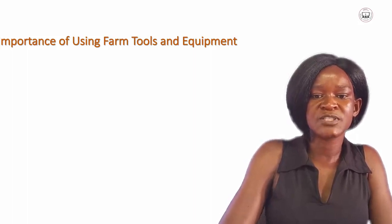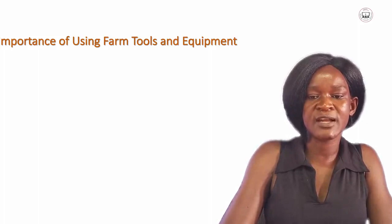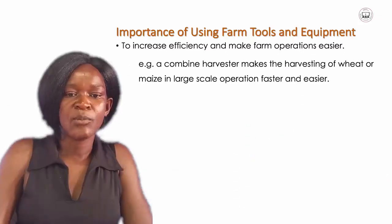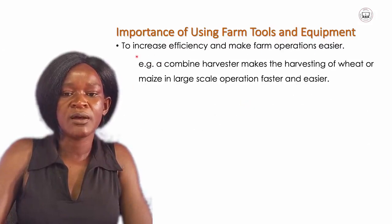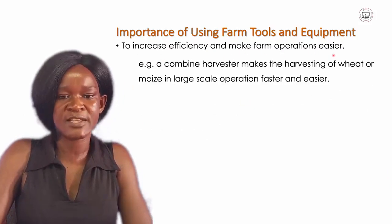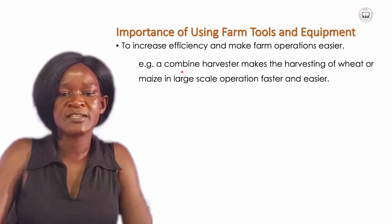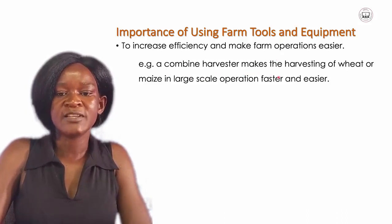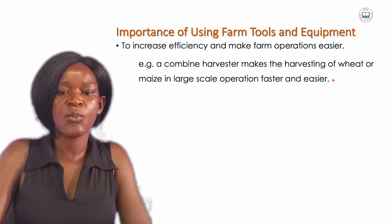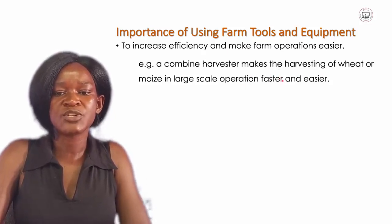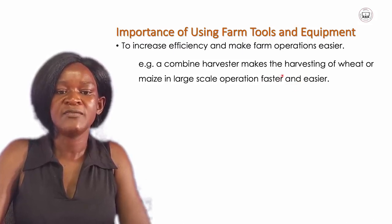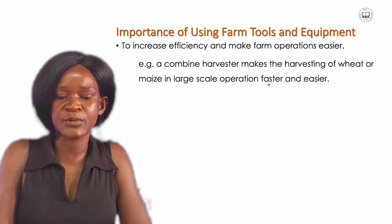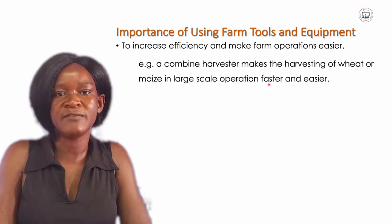How are farm tools and equipments important in agricultural production? Number one: these farm tools and equipments increase efficiency and make farm operations easier. For example, the combine harvester makes harvesting very easy on a large-scale operation, making the operation fast as well as easier, even on a large scale, because these equipments are very fast.